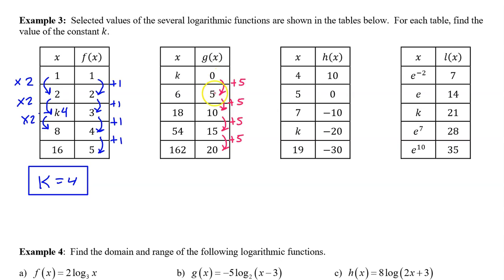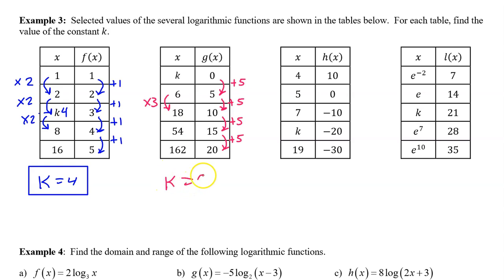For g of x, the output values are equally spaced, so the input values will vary multiplicatively. 18 divided by 6 is 3, so the common ratio is 3. We can work backwards: 18 divided by 3 is 6, and 6 divided by 3 is 2. So k must equal 2.